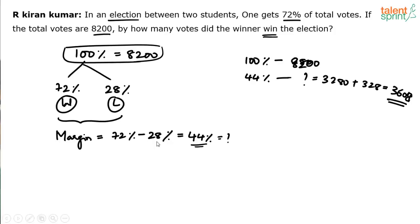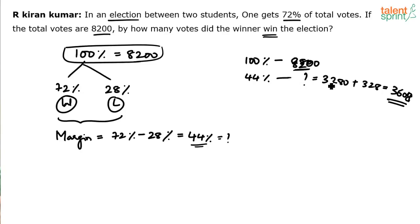The final answer is 3,608. If 100% is 8,200, then 44% equals 3,608. I split 44% as 40% plus 4%. 10% is 820, so 40% is 4 times 820 which is 3,280. 4% is 328. Adding these two gives 3,608. So the winner won the election by 3,608 votes — that's the final answer.